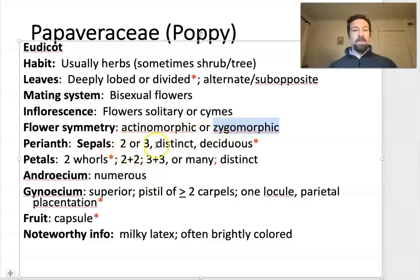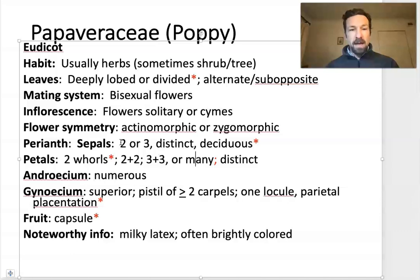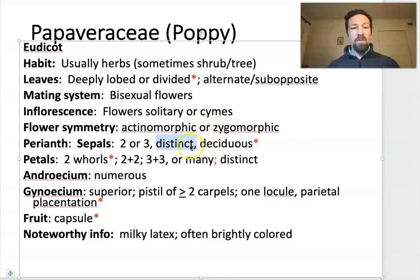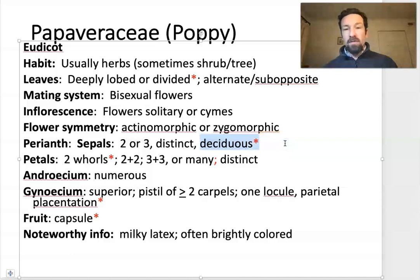These flowers have sepals. Remember that in many of the basal angiosperms, sepals were not clearly separated from petals, and we often used the term tepals. But here it's pretty clear what are sepals versus what are petals. There are usually only two or sometimes three sepals, with no fusion of sepals. And importantly, the sepals are deciduous, meaning that they fall off when the flower is mature.